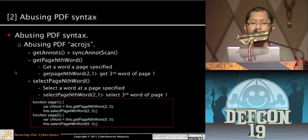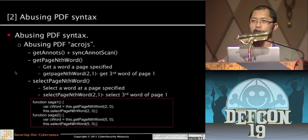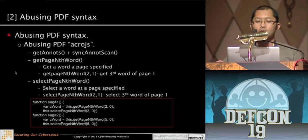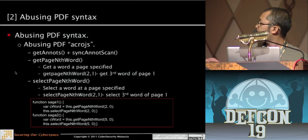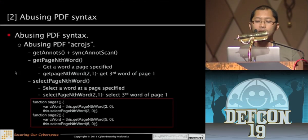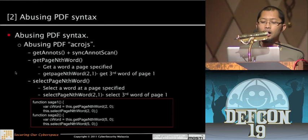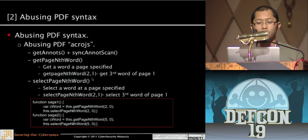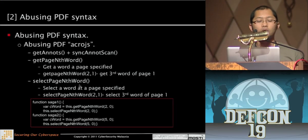Another technique is abusing Acrobat-specific JavaScript designed for the PDF engine, especially Adobe. Functions like getAnnot, syncAnnotScan, getPageNumWords, and getPageNthWord are specifically for the Acrobat JS engine. For example, getPageNthWord(0,1) gets the third word of page one. These functions can be used for obfuscation within PDF JavaScript implementations.